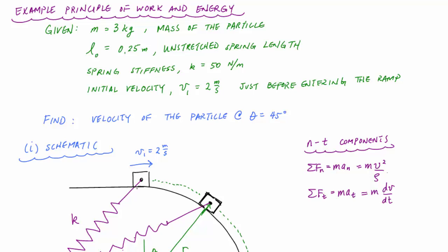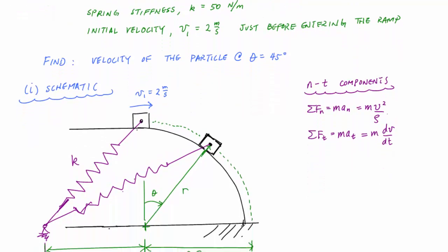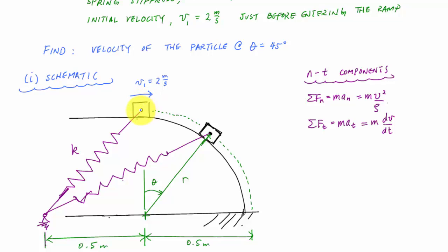All right, what's up everyone? Welcome back to Structure-Free Learning. And in this video, we're going to do an example problem using the principle of work and energy. Got here a particle that has a mass of three kilograms. It's sliding here just before it enters this frictionless ramp at two meters per second. And it's connected to a spring with a stiffness. The stiffness is 50 newtons per meter.